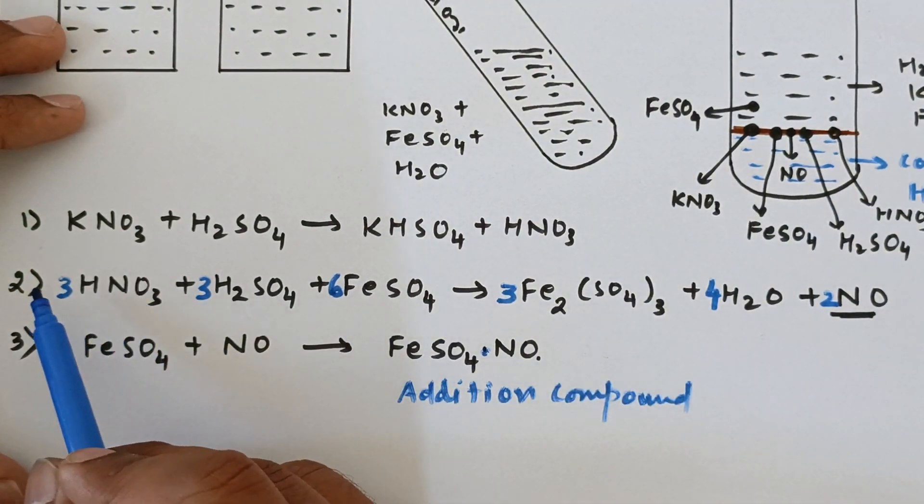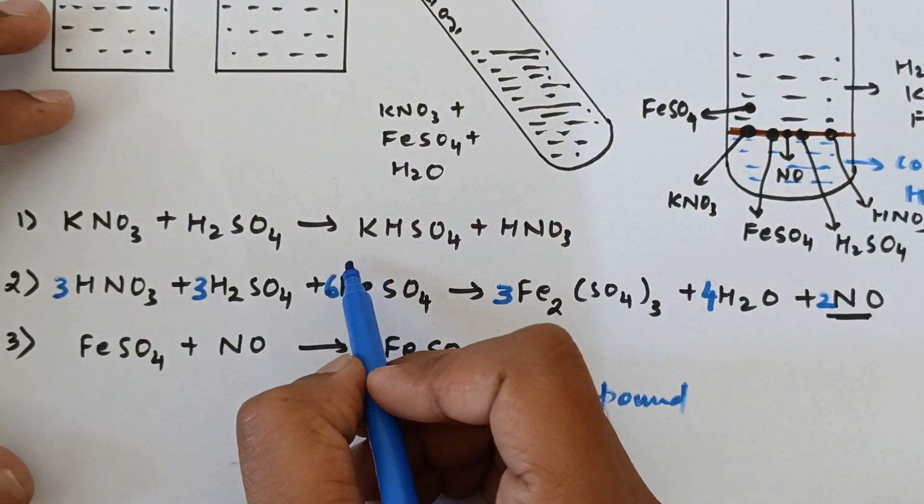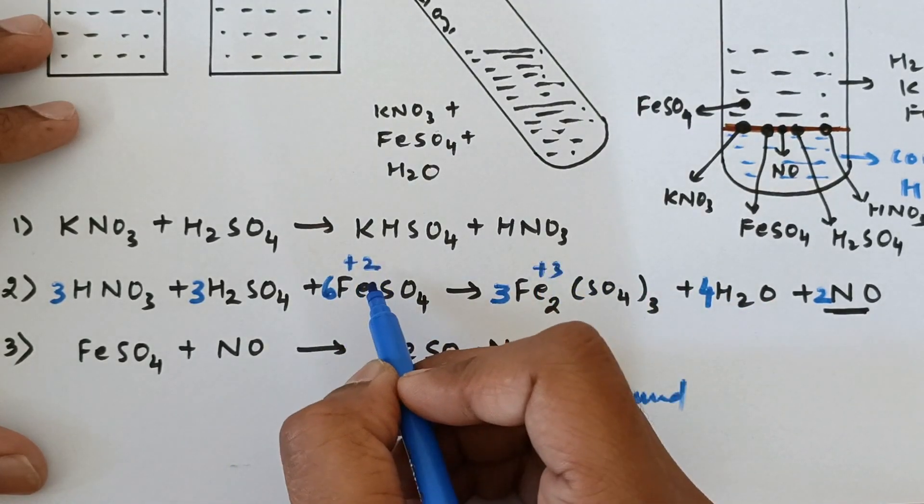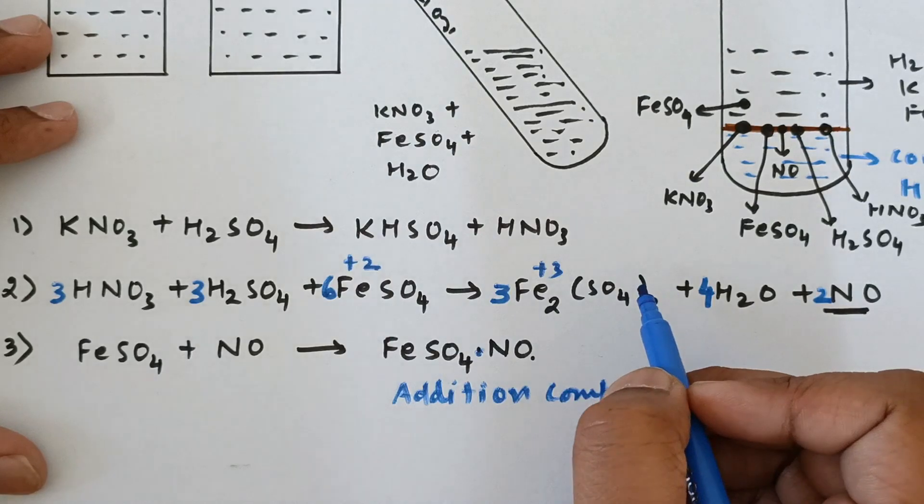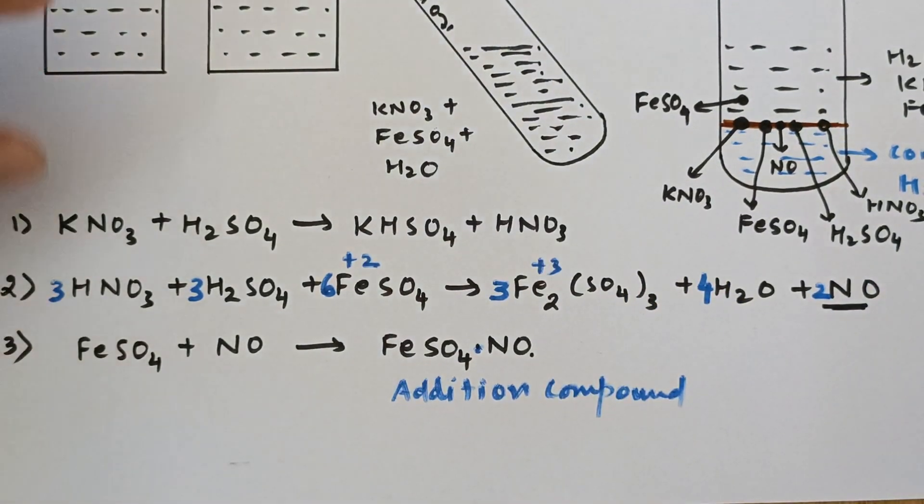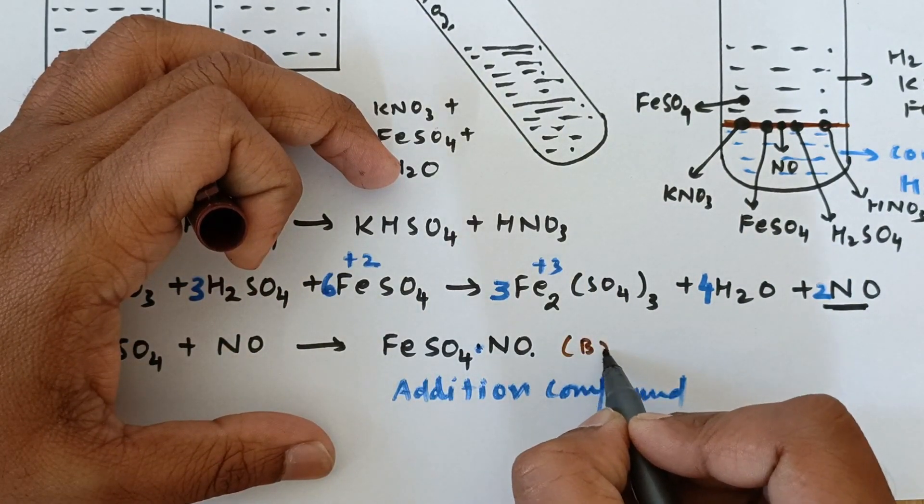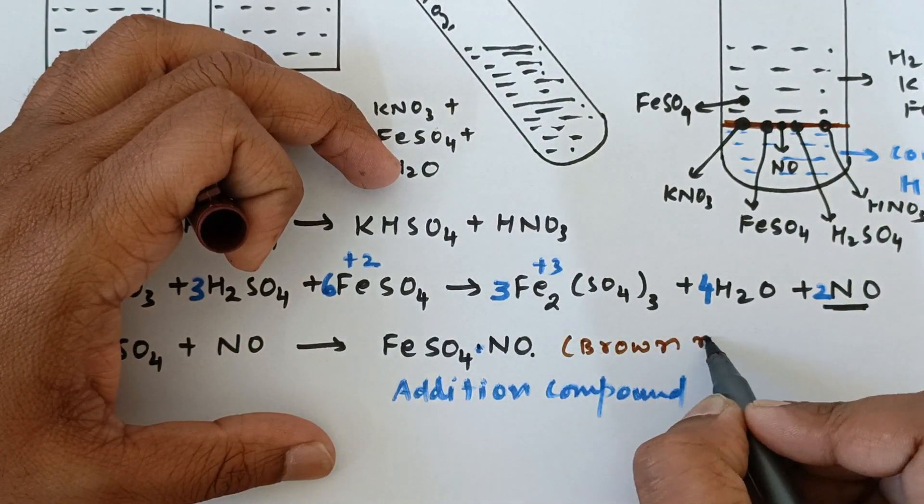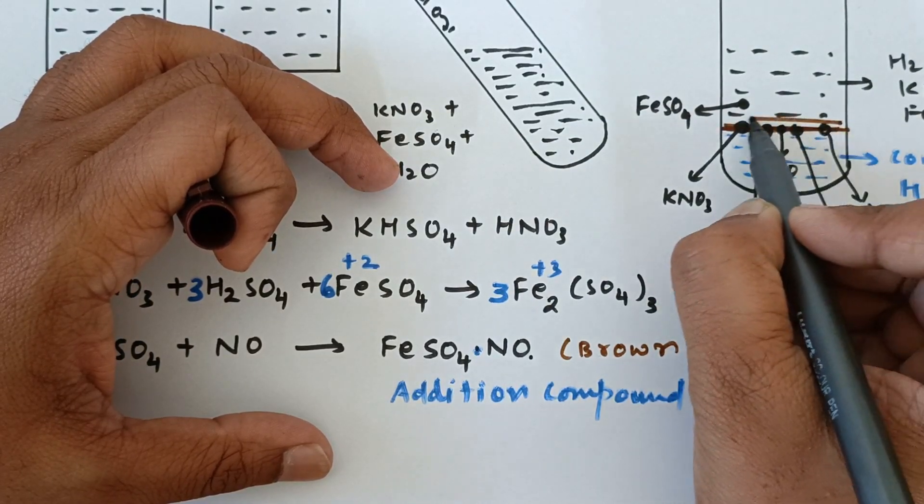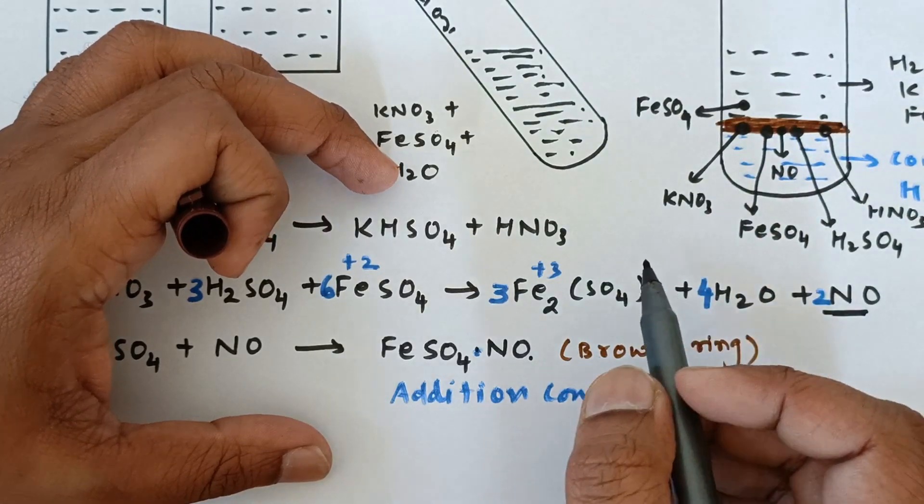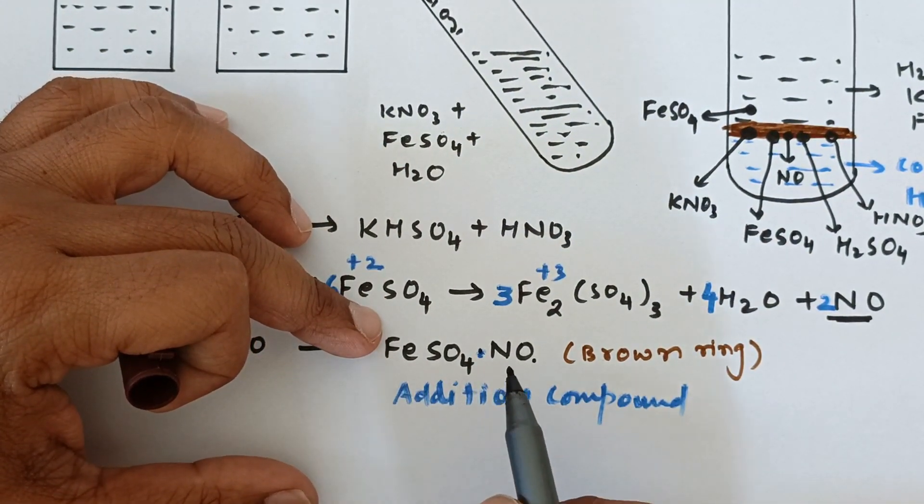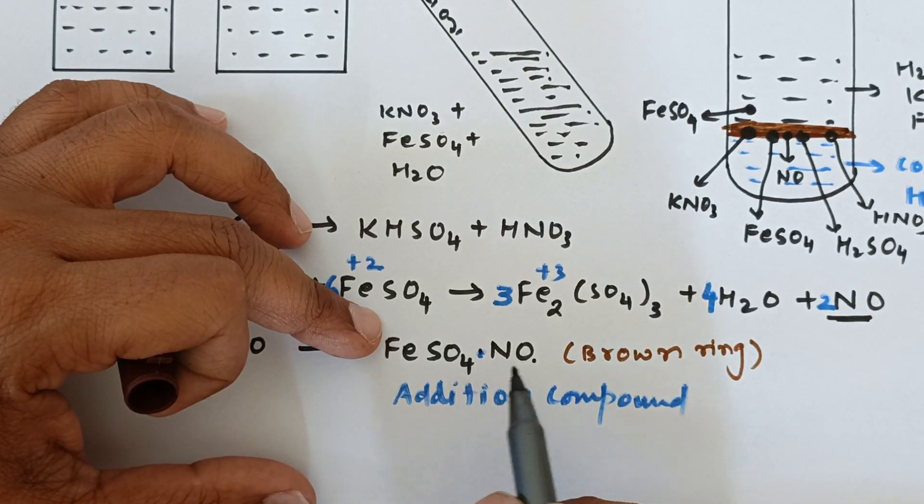Now this reaction basically is a redox reaction. So you could have already spotted that the valency of Fe changes from plus two to plus three over here. Right. Now this is what is the brown ring formation. Just a very small distance apart from the interface, you will be getting a brown ring over here due to the formation of FeSO4·NO, which we also call nitrosyl ferrous sulfate.